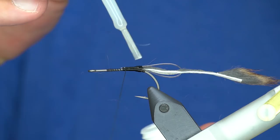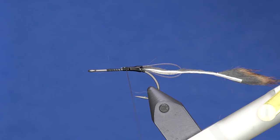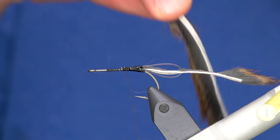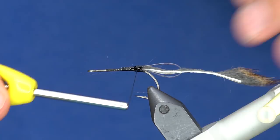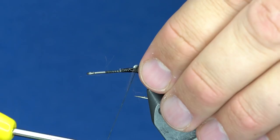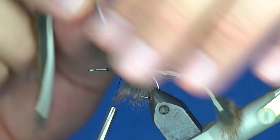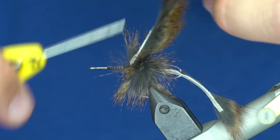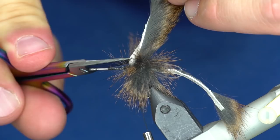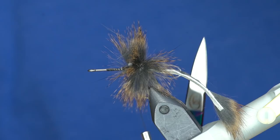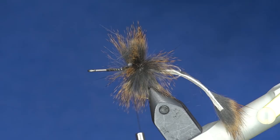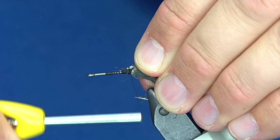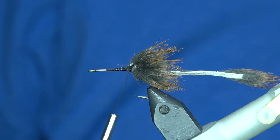I'm just going to reinforce what I've done so far with some Loon Z-ment, just a CA glue or super glue. Now I'm going to take a section of zonker and tie that in right back here and wrap this forward. This is a really thick one so I'm just going to do one turn and trim it back off. By the way, I'm using these little stubby Renzetti scissors and they are the bomb.